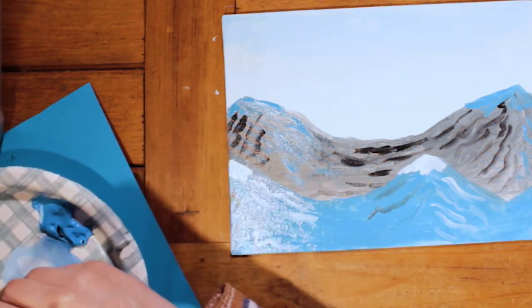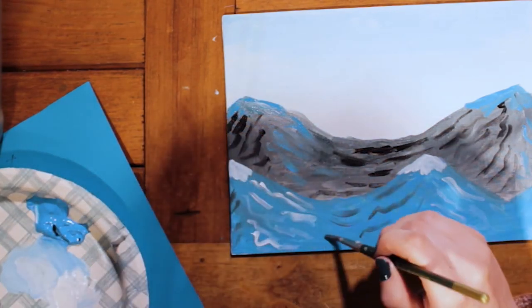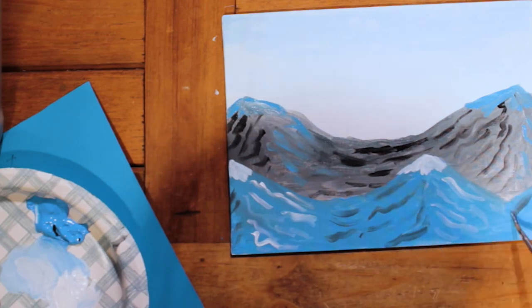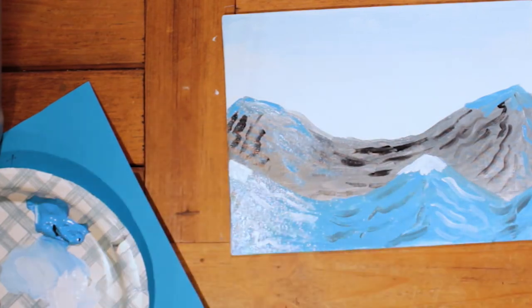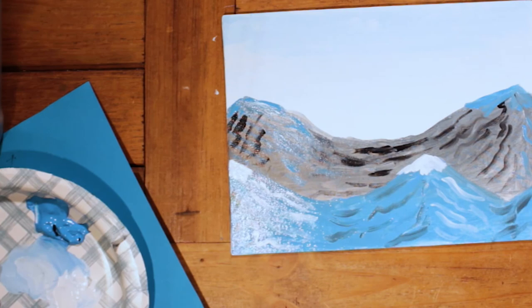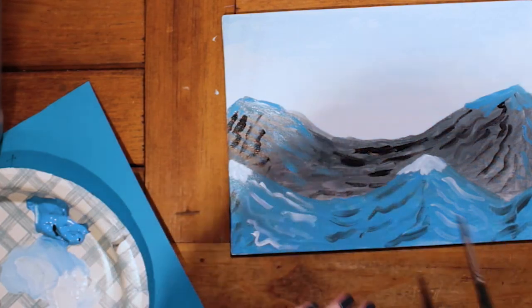And more details. And if you find that you don't like some of the details you added, you can just take whatever color the mountain range is and just kind of go back over it.